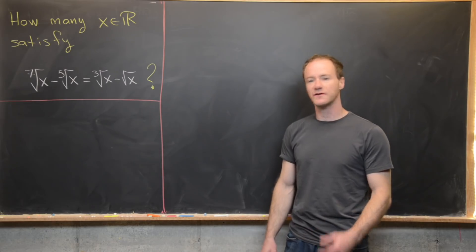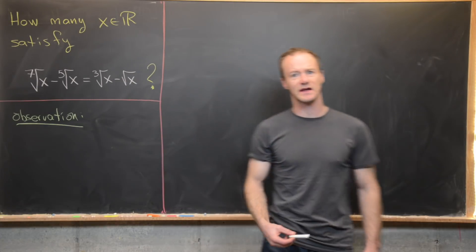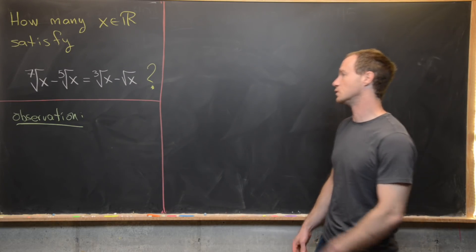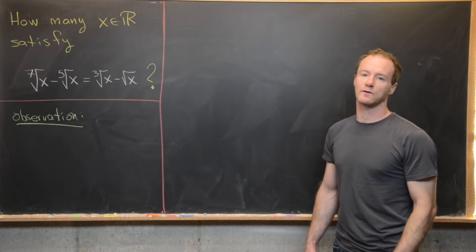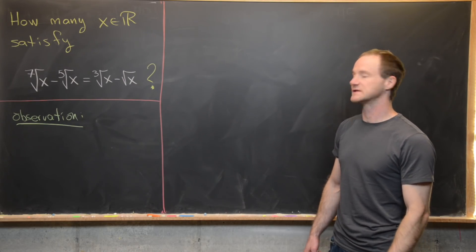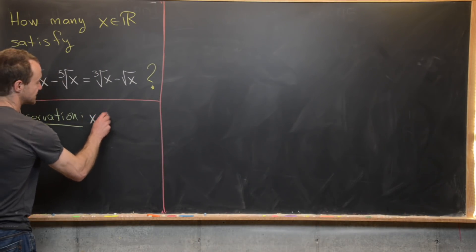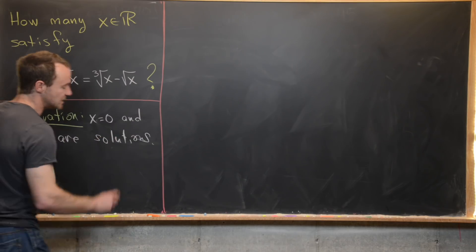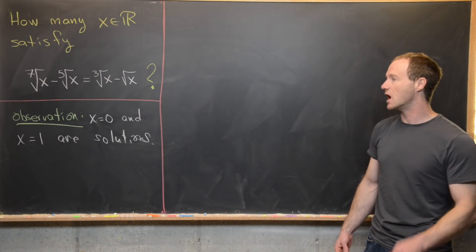Before we get started solving this, I want to make the observation that there are a couple of very obvious solutions: x equals 0 and x equals 1. If we plug in x equals 0 we have 0 minus 0 on both sides. If we plug in x equals 1 we have 1 minus 1 on both sides. So those are both solutions.